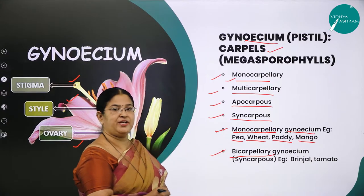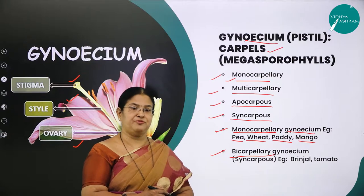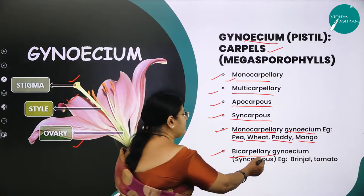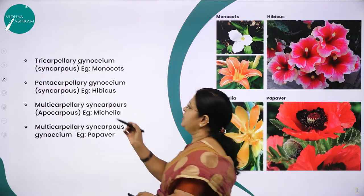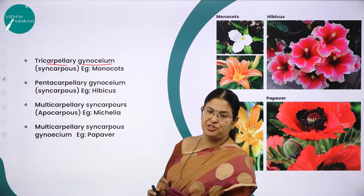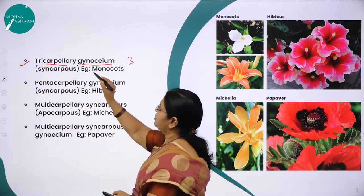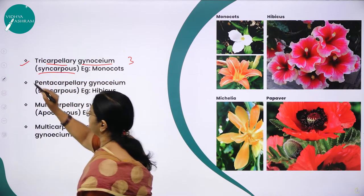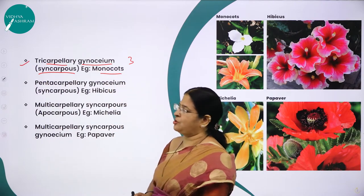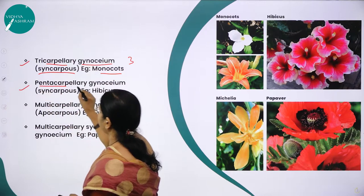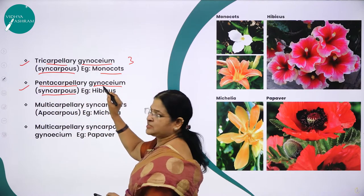Bicarpellary gynoecium means the gynoecium consists of two carpels. Tricarpellary gynoecium means the gynoecium consists of three carpels; when fused, it is tricarpellary syncarpous. Pentacarpellary means five carpels that are fused — pentacarpellary syncarpous gynoecium; the example is hibiscus. Multicarpellary apocarpous — where carpels are more than two and free — the example is michelia.